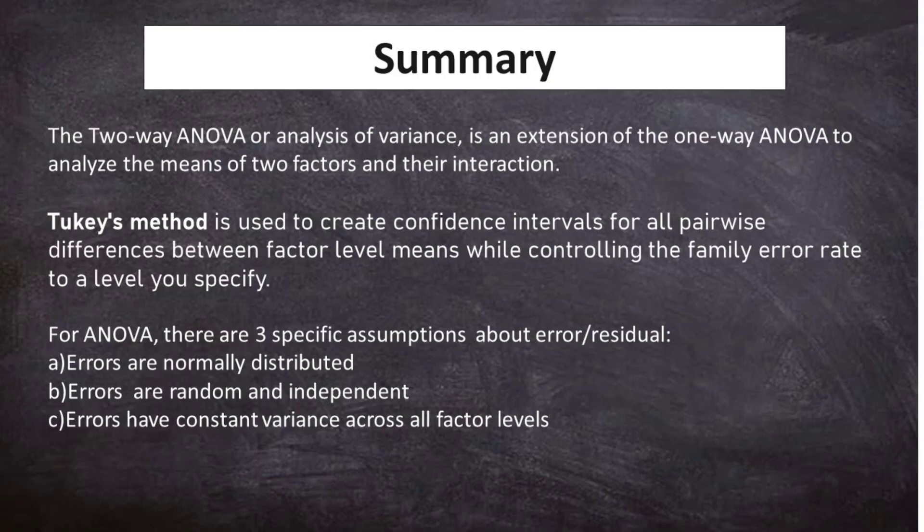The two-way ANOVA or analysis of variance is an extension of the one-way ANOVA to analyze the means of two factors and their interaction. Tukey's method is used to create confidence intervals for all pairwise differences between factor level means while controlling the family error rate to a level you specify. For ANOVA, there are three specific assumptions about error or residual which are errors are normally distributed, errors are random and independent and errors have constant variance across all factor levels.